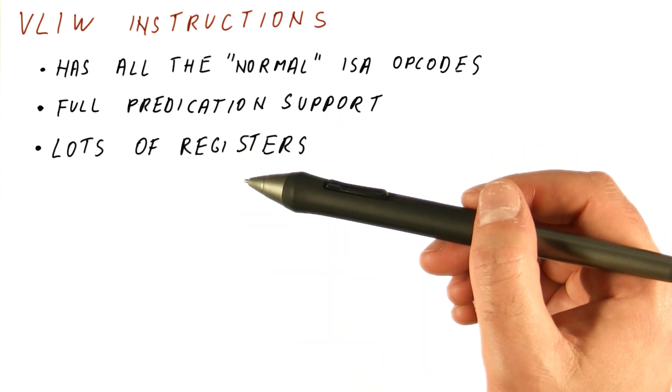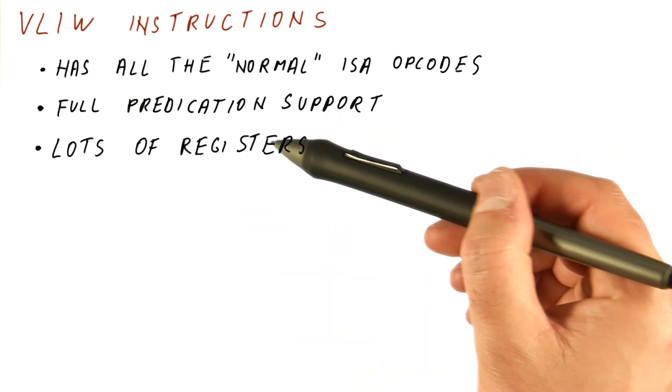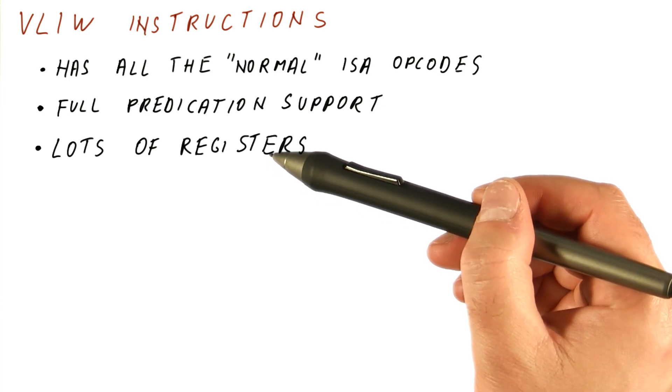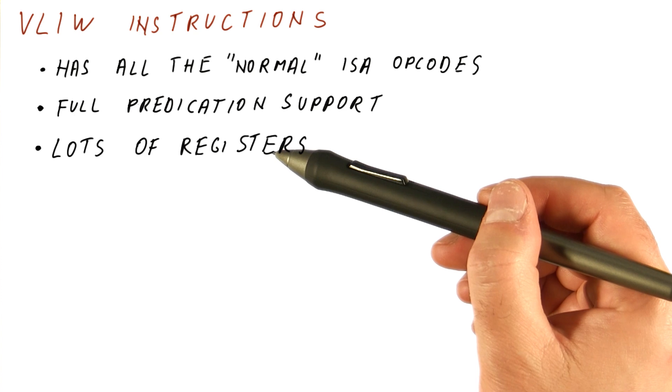A VLIW ISA also typically includes a lot of architectural registers. The reason for this is that a lot of the scheduling optimizations require use of additional registers.